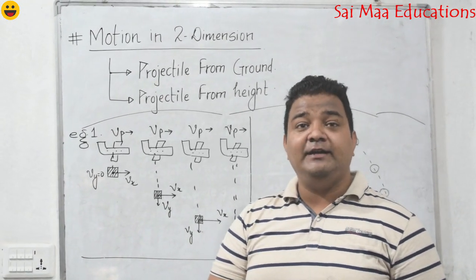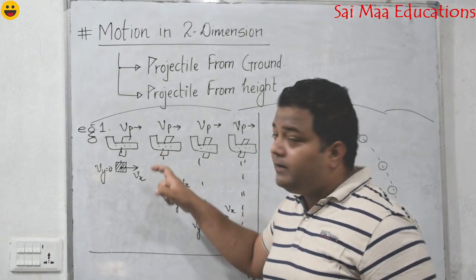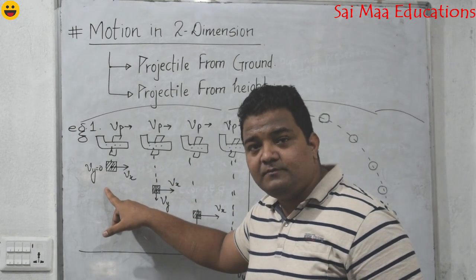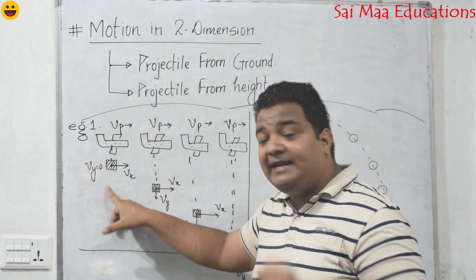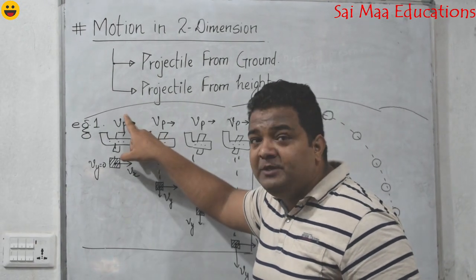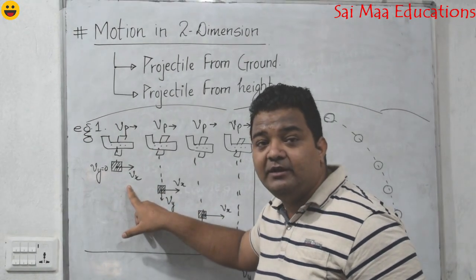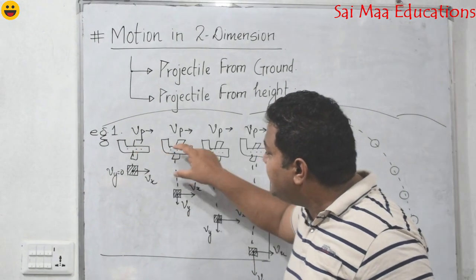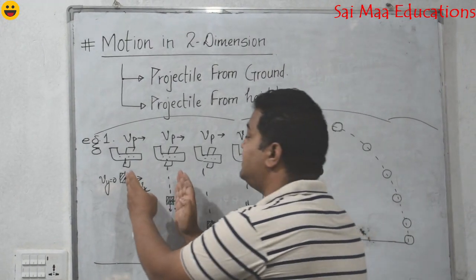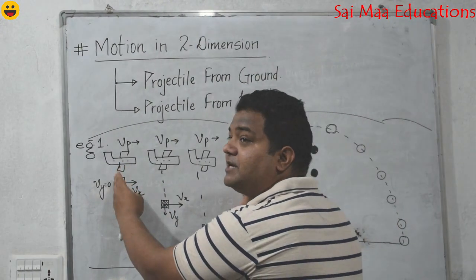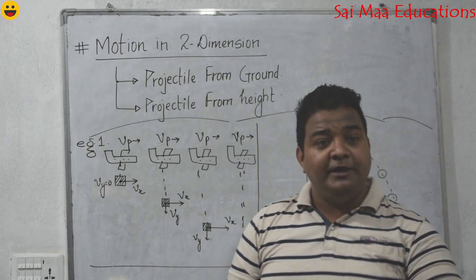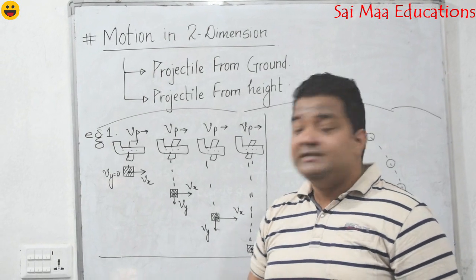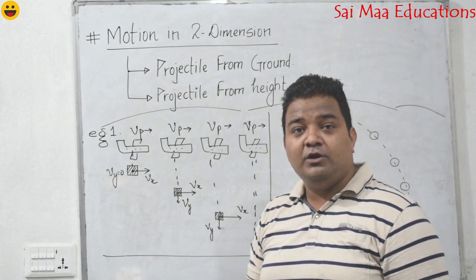When the plane drops the package, the plane gives its own velocity to the package. That means the package has velocity Vp — so Vx equals Vp. The horizontal distance traveled by the box is the same as that of the plane. The important difference is that since this box is dropped, in the vertical direction there was initially no velocity, but vertical velocity will increase due to gravity.